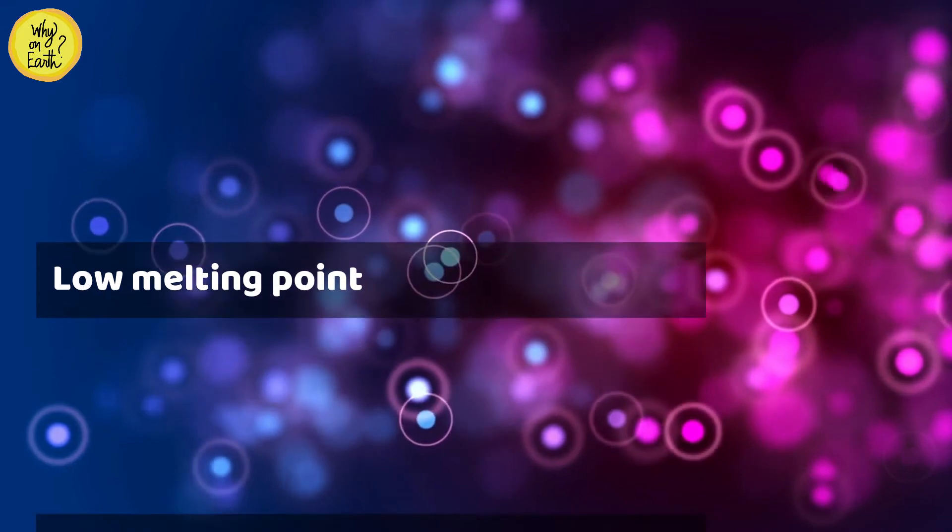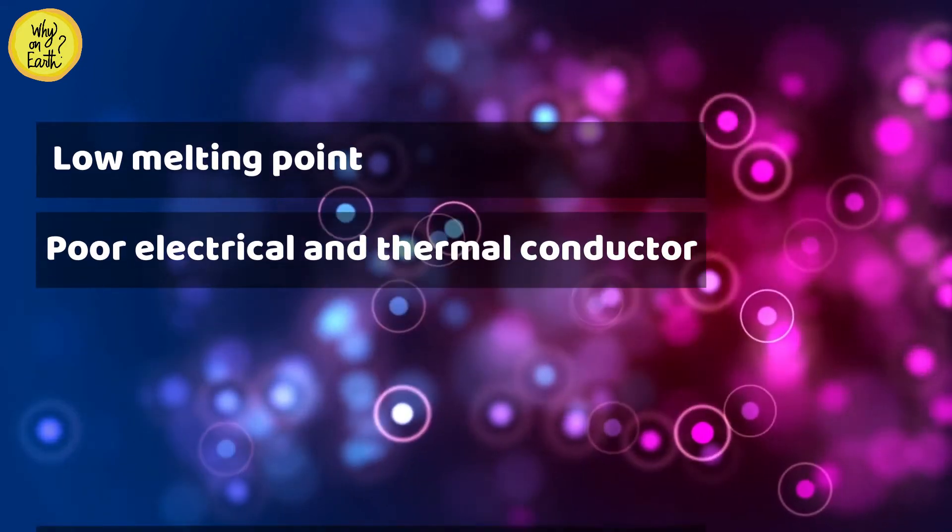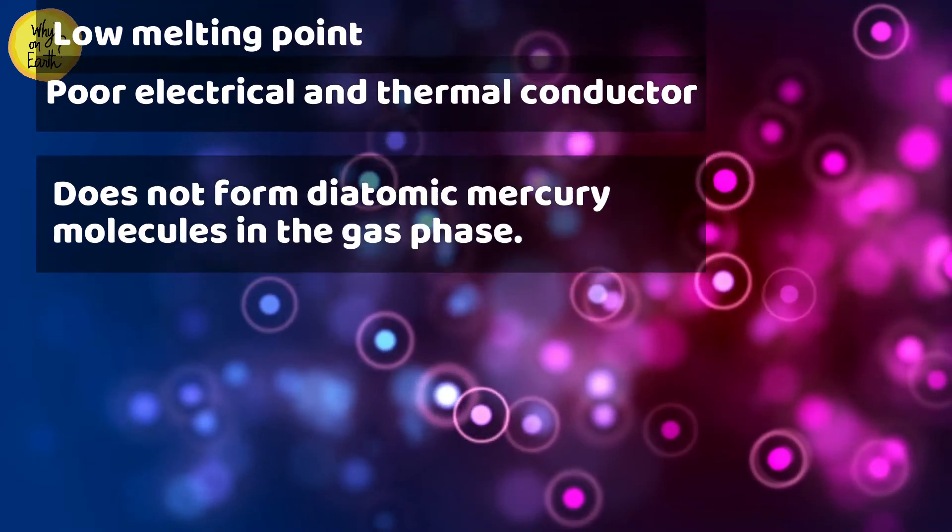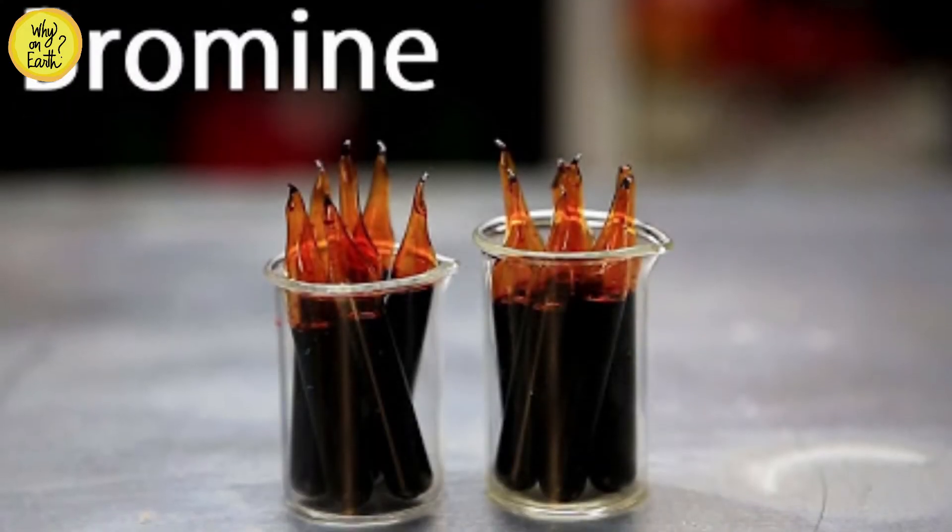Mercury is a poor electrical and thermal conductor and does not form diatomic mercury molecules in the gas phase. Did you know the only other element on the periodic table that is liquid at room temperature and pressure is halogen bromine?